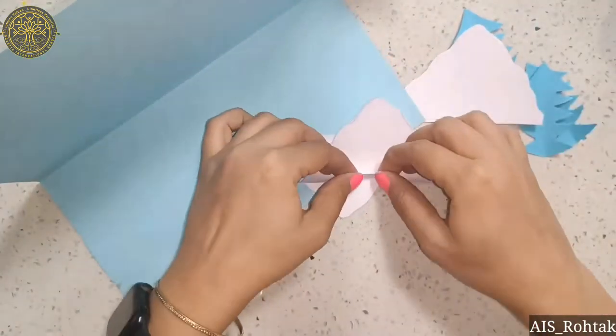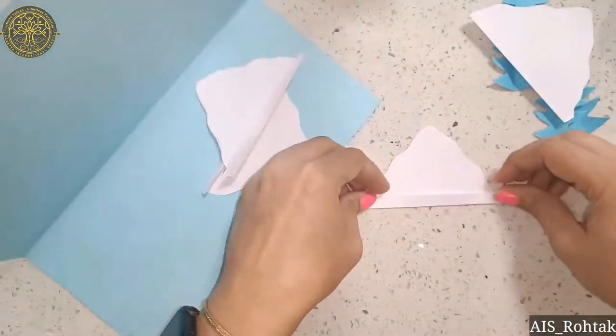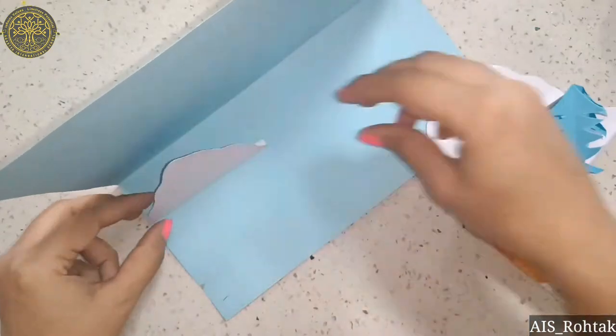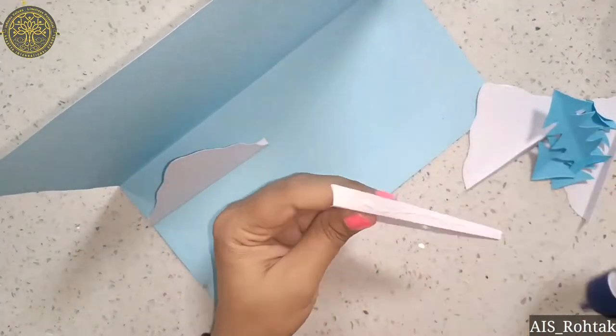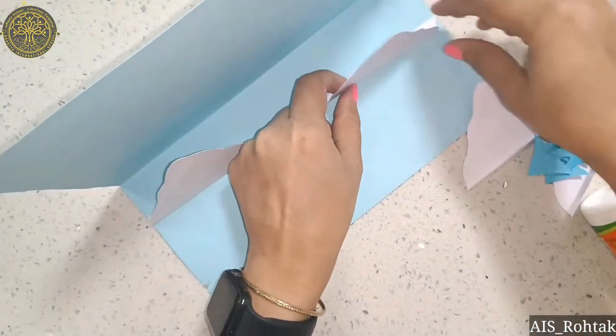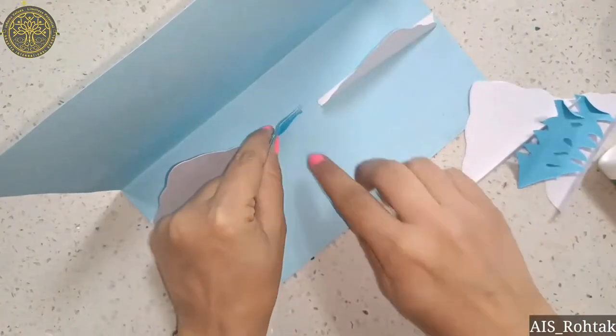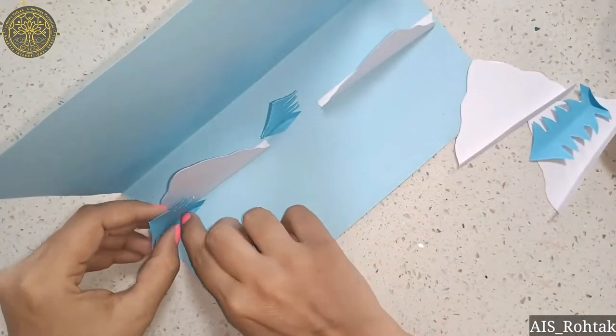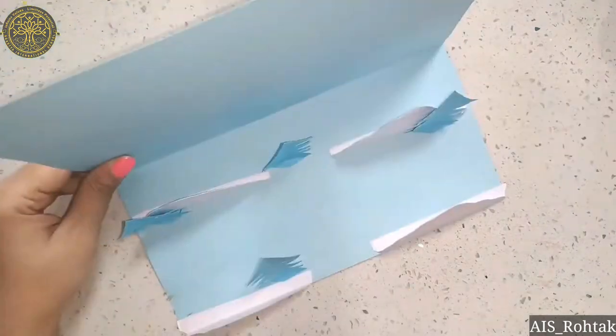Now fold these mountains from the lower side like this and fold the trees also. Then put glue and paste on the light blue color sheet like this. Same with the trees, we have to paste trees like this.